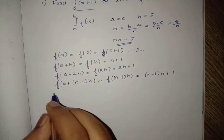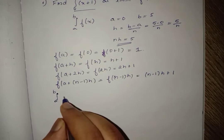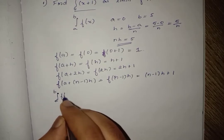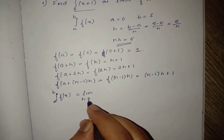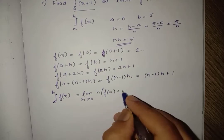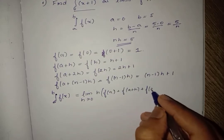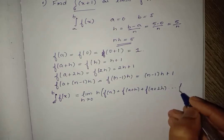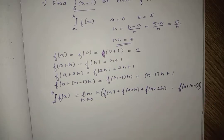We know that the integral from a to b of f(x) dx equals limit as h tends to 0 of h times [f(a) + f(a+h) + f(a+2h) + ... + f(a+(n-1)h)]. This is the formula we need to know by heart for the exams.